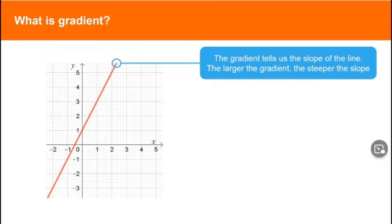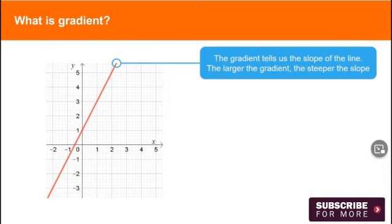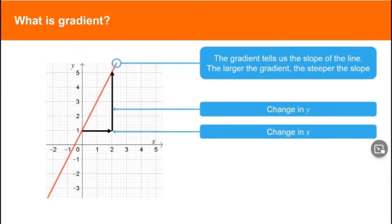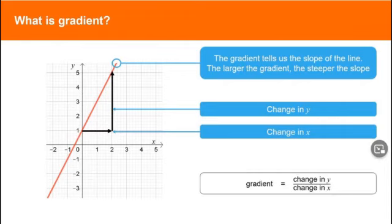When we work with gradients on graphs, instead of saying the change in height divided by the horizontal distance travelled, we usually say the change in y divided by the change in x. For this graph, the gradient is the change in y divided by the change in x.